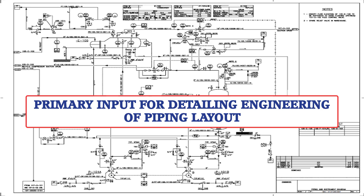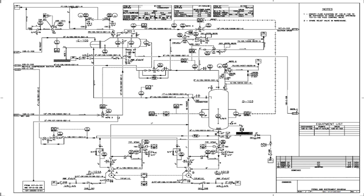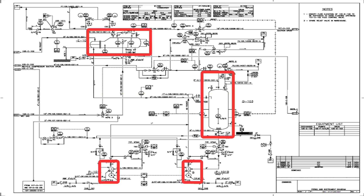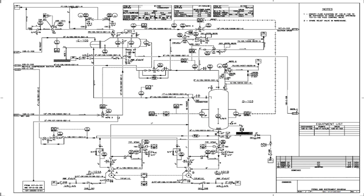P&ID is a primary input for detail engineering to start developing piping layouts. P&ID is a detailed process diagram showing all the equipment, includes all the lines, valves, instruments, and control systems.